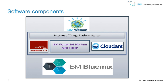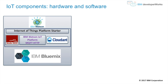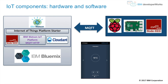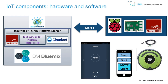The software components are the IBM Watson platform with the Internet of Things platform starter, Node-RED, IBM Watson IoT platform with MQTT and HTTP protocols, the IBM NoSQL Cloudant database, and the IBM Bluemix cloud. IoT hardware and software components communicate via the MQTT protocol to Raspberry Pi and Node-RED, and also include a virtual temperature sensor and a device that allows you to talk to the Roomba robot.